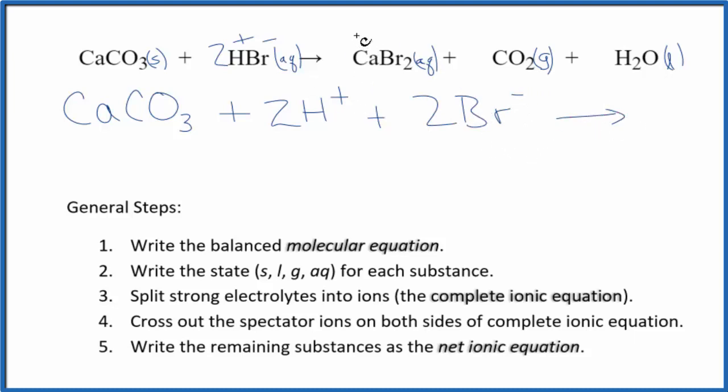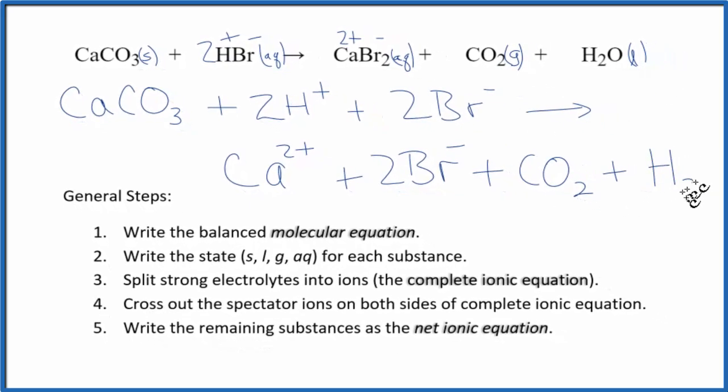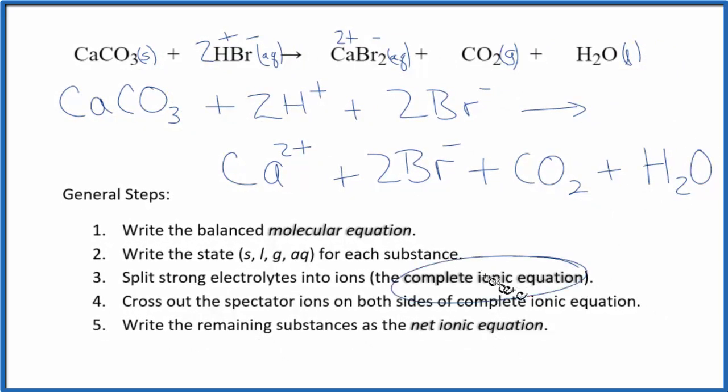And those are the reactants in our net ionic equation. In the products, calcium's in group two, that's two plus, and then that bromine, that'll be one minus for the bromide ion. We'll have Ca2+ plus two of these bromide ions. And then in net ionic equations, we don't split apart gases, so we'll have CO2. And we don't split apart liquids, so we'll have H2O. This is our complete ionic equation.